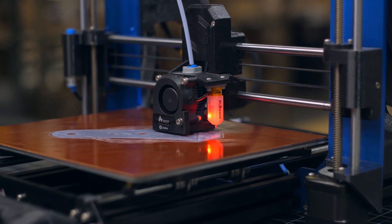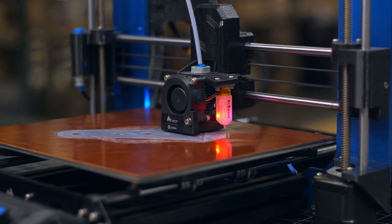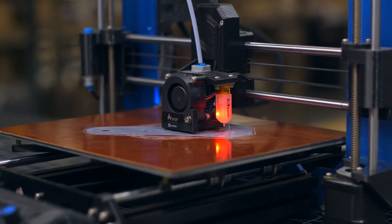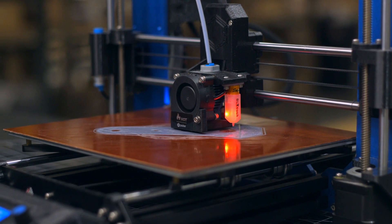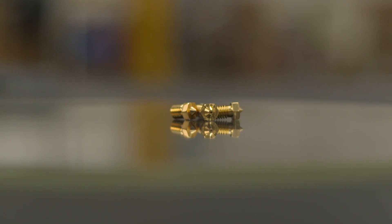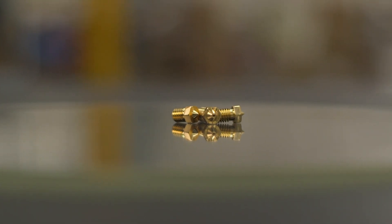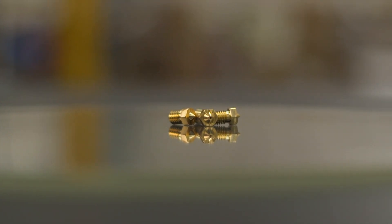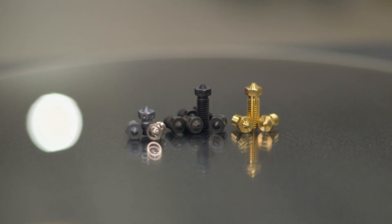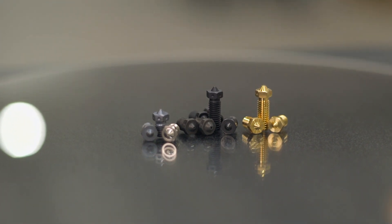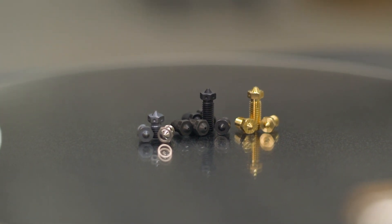For most users, nozzles are treated as a component to be replaced as it wears down. But with a catalog as wide and deep as E3D's, it's easy to see that nozzles can be more than simple consumables. While the unofficial industry standard nozzle is made of brass with a 0.4mm orifice, E3D produces nozzles in a variety of materials and sizes, from brass to hardened steel, and 0.15mm all the way up to the gigantic 1.4mm.